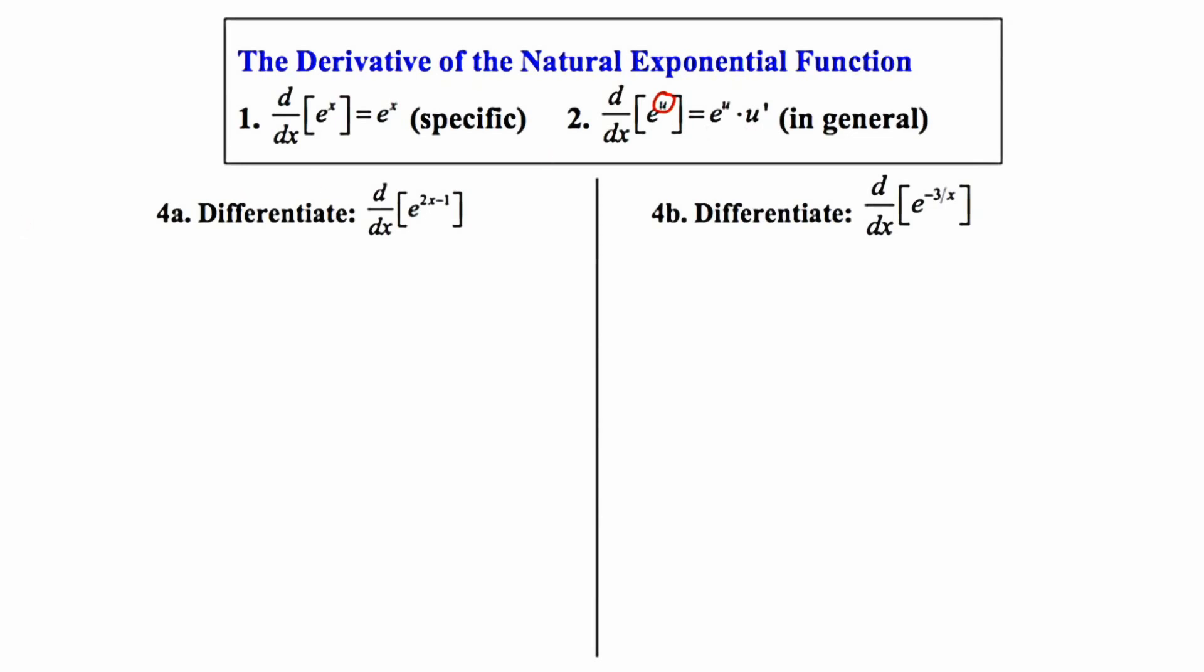In 4a, we're asked to take the derivative of e to the 2x minus 1. So I'm going to allow u to equal 2x minus 1. And the derivative of u, which I'll call u prime, is equal to 2. So therefore, the derivative of this is going to equal e to the 2x minus 1.